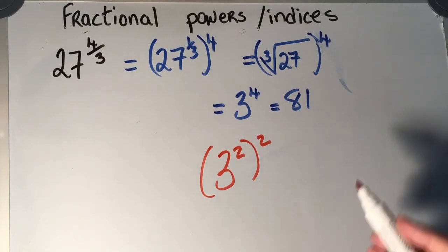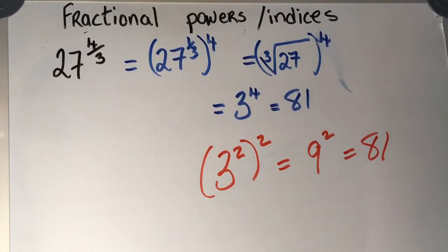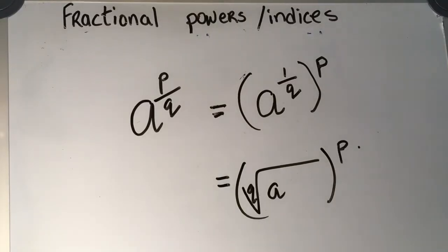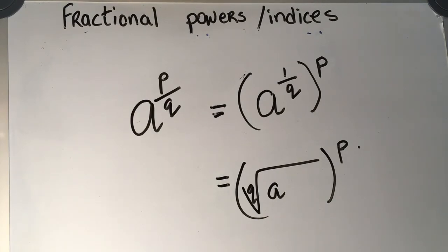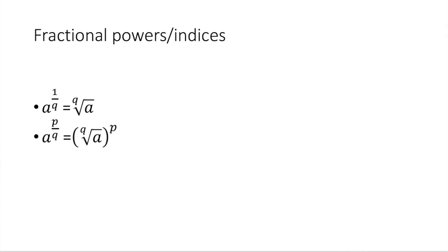So the general rule is: a to the power of p over q is equal to a to the power of 1 over q, all raised to the power of p. That's equal to the qth root of a, all to the power of p.